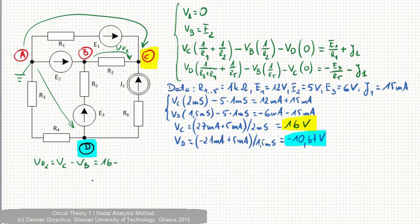Vc is 16, Vb is E2, E2 is 5. It is 11 V. If someone wants to calculate the power dissipated by R2,